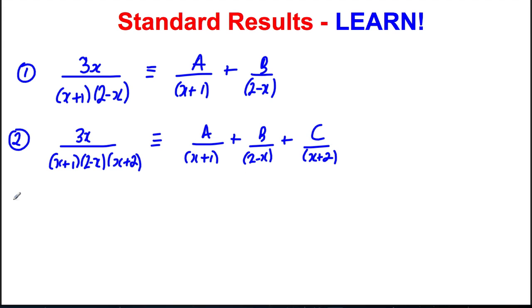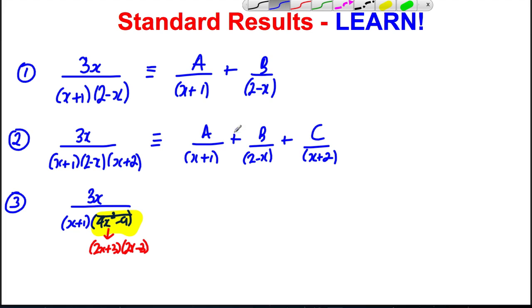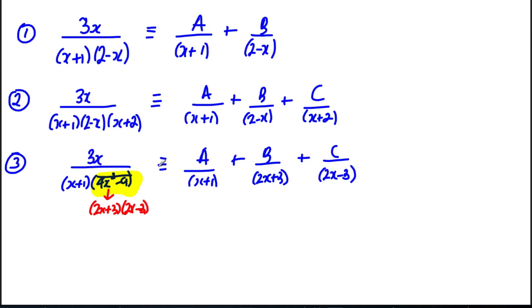Something to look out for: these tend to come up quite a lot. You're supposed to spot here that this term is a difference of two squares. It can be factorised as 2x plus 3, 2x subtract 3. Therefore, this is actually something with three distinct factors. It would be A over x plus 1 plus B over 2x plus 3 plus C over 2x subtract 3. Do look out for that. That's a very standard result.